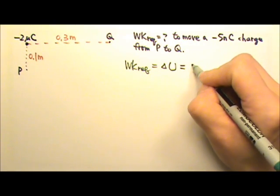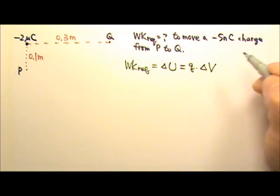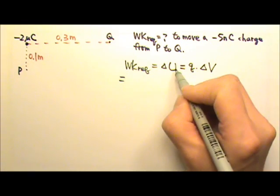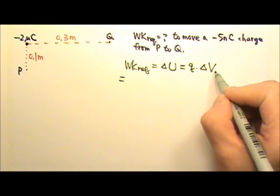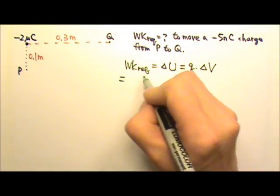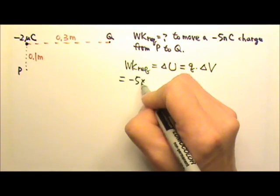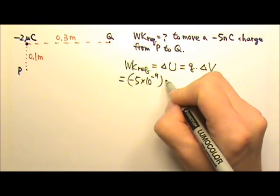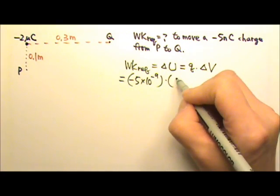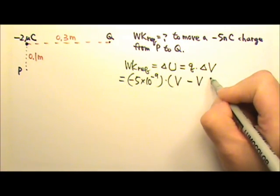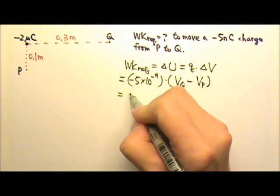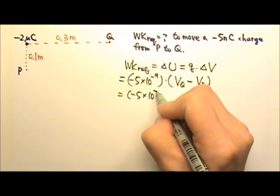And the delta U equals to Q times delta V. The charge we are moving is negative 5 nanocoulombs. Potential energy and potential, they are scalars. So we need to make sure that we plug in the signs for everything. So this is a negative 5 nano is the Q. And then the charge is being moved from P to Q, which means that delta V is the final minus the initial potential. The final position is at Q, the initial position is at P.